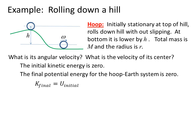So K_final equals U_initial. The potential energy initially is equal to the mass of the hoop times g times h. So K_final is equal to one half times the moment of inertia of the hoop times omega squared plus one half times M times r omega squared. This is what we had just found in the previous slide.